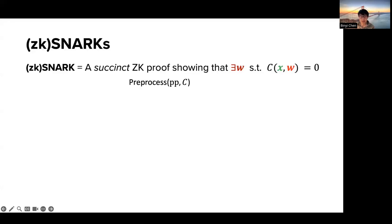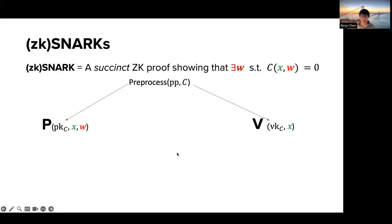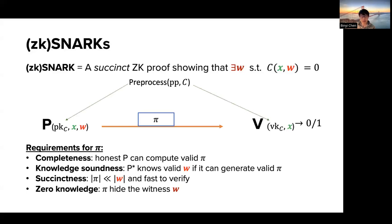It usually consists of some preprocessing phase: given some public parameters and some circuit C, you generate a proving key and verification key. Later, the prover after receiving the public inputs and witness should be able to generate a short proof, and the verifier after getting the proof will output a bit indicating whether it accepts or not. It has to satisfy completeness — a honest prover with a secret witness can compute correct proofs — and knowledge soundness, meaning a malicious prover passing verification must actually know some correct witness.